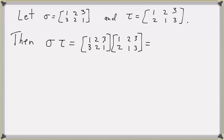Let's write this as an element of S_3. Tau maps one to two, and then sigma maps two to two, so one is getting mapped to two under this composition. Similarly, tau maps two to one, and then one is getting sent to three by sigma, so two gets mapped to three. And then three is getting mapped to one.